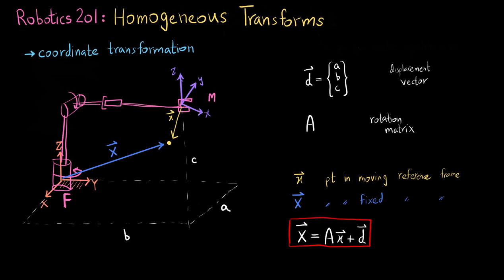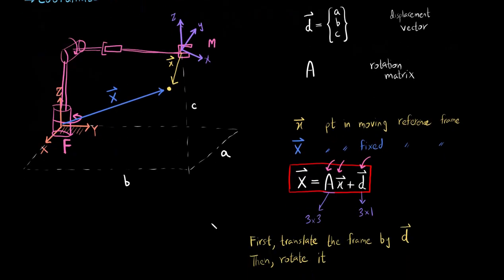Let's dissect this equation. If you look at the second term, you are first displacing by the displacement vector — which makes sense, because initially we displaced the fixed frame by the displacement vector — and then you are multiplying the rotation matrix with the point, which gives you the same point expressed in the fixed frame. The way to read this is: you first translate the frame by the displacement vector and then rotate. So it is reading from right to left.